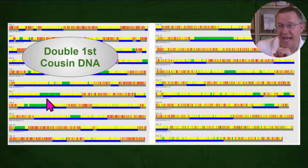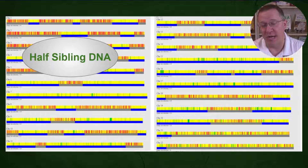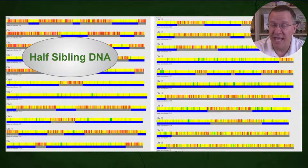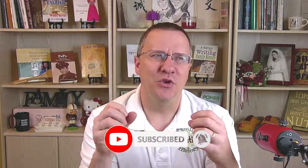Double first cousins are going to have fully matched regions, whereas half siblings are not. So if you come across a situation where you think you might have either a half sibling or a double first cousin, check on a chromosome browser. If they have fully matched regions, they are double first cousins, not half siblings. Chromosome browsers aren't needed for everything — for most relationships you can determine the difference simply by how much shared DNA. The reason this case was tricky is that double first cousins share the same amount of DNA as half siblings, but as you saw, how that DNA sharing is distributed is different between those two relationships.